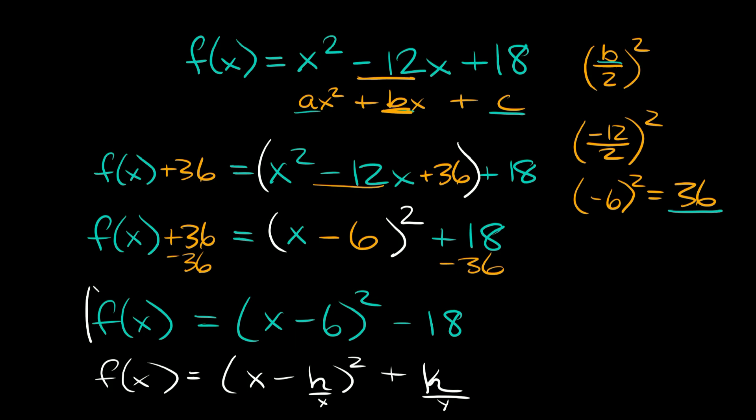If this is our final function in vertex form, where would the vertex be? This is our x coordinate and this is our y coordinate. The only thing is you want to take the opposite sign for your x coordinate, so since here it's -6, you use positive 6. Your y always stays the same, so it's -18. The vertex for this function is at (6, -18).